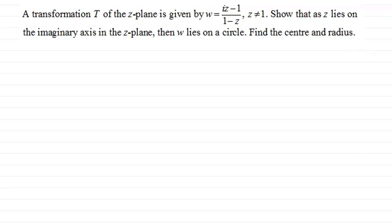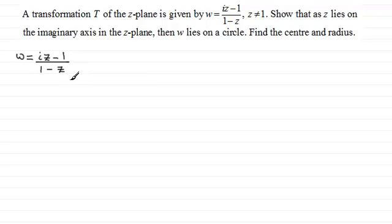To do a question like this, what I want to do is copy down the transformation t: w equals iz minus 1 divided by 1 minus z. Next, I'm going to rearrange this to make z the subject, and then compare real and imaginary parts. From that we should be able to get a relationship in terms of u and v if we let w equal u plus iv.